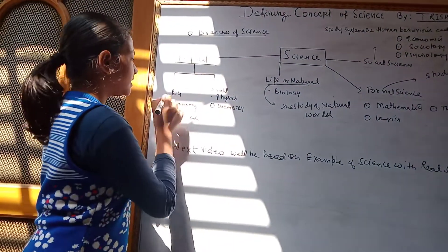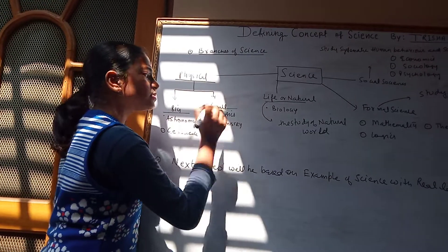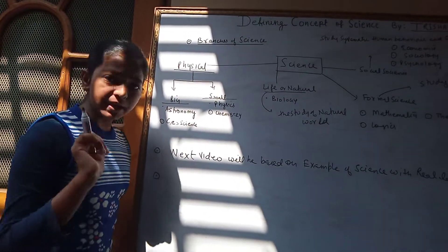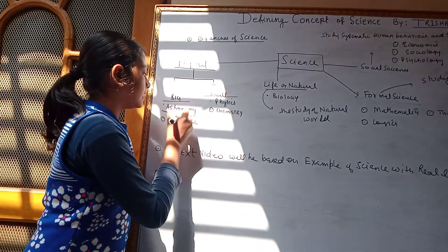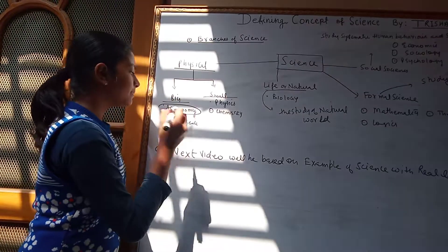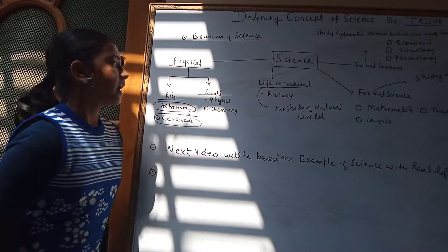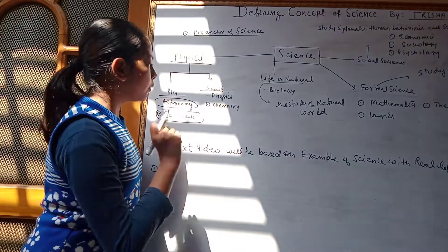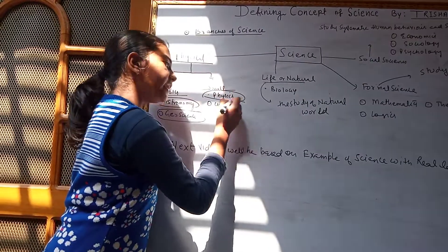Science is classified into Big Physical Science and Small Physical Science. In Big Physical Science, we learn Astronomy and Geophysics. In Small Physical Science, we learn Physics and Chemistry.